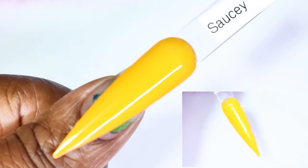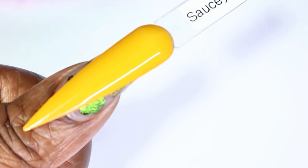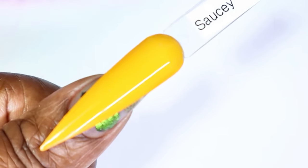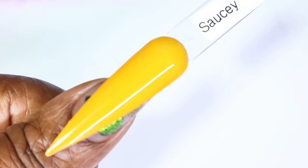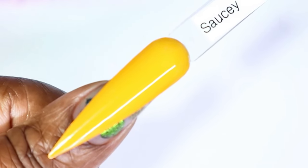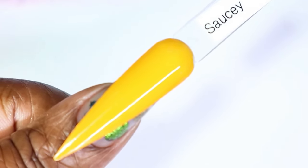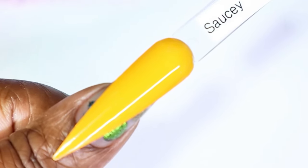And here we have Saucy with two coats against my skin tone. So even with it against my skin, remember I said I'm not really a big fan of yellows like that. I would definitely wear this one. This is a yellow that I feel would go really nice with my skin tone.